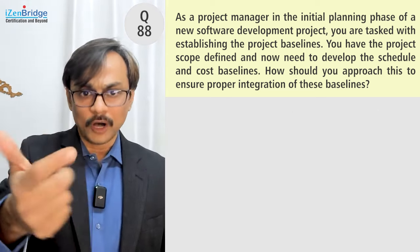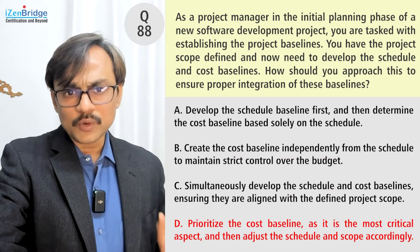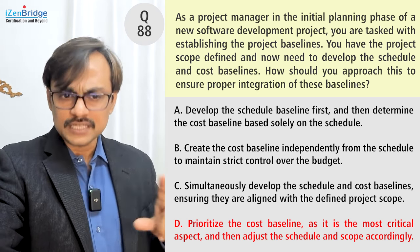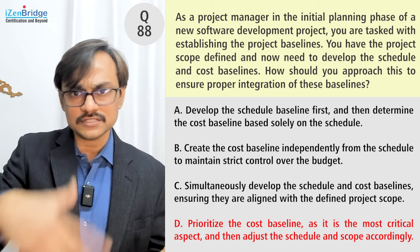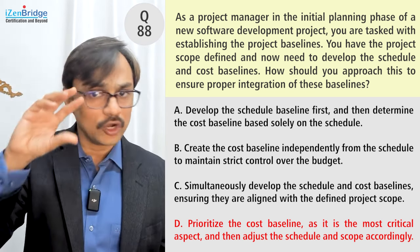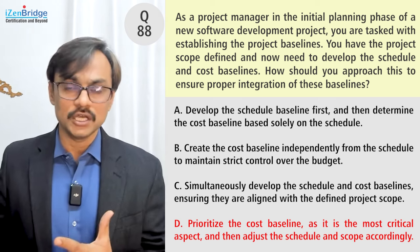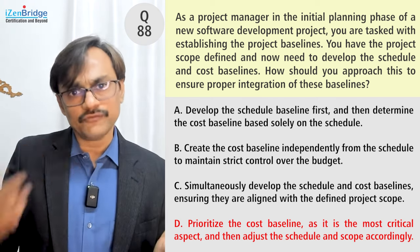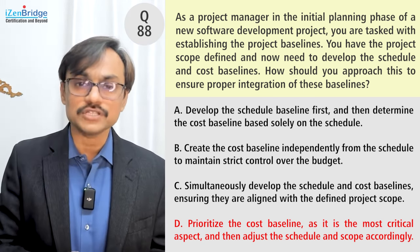Option C looks good — work in an iterative manner. Option D says: prioritize the cost baseline as the most critical aspect, then adjust the schedule and scope accordingly. The question is not indicating cost is the most critical aspect. Options B and D are more or less the same — just different language — suggesting fix the cost and figure out the rest, which might fit an agile context, but the question doesn't provide that context.